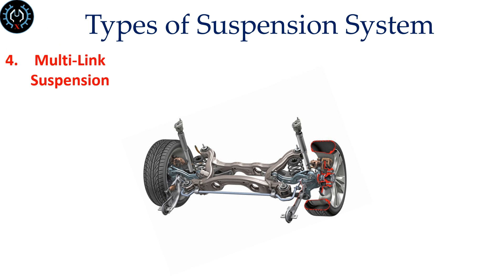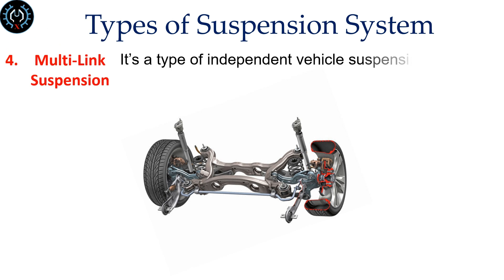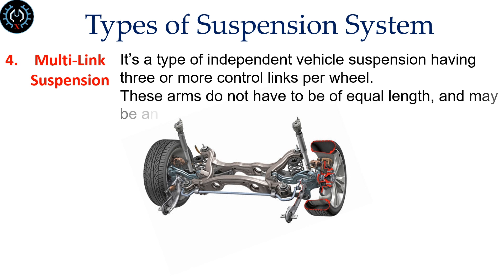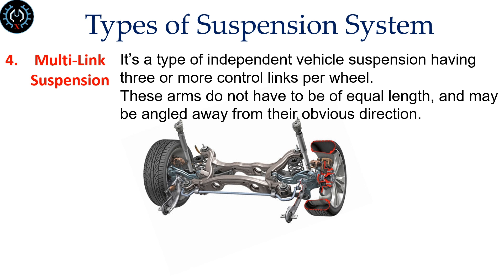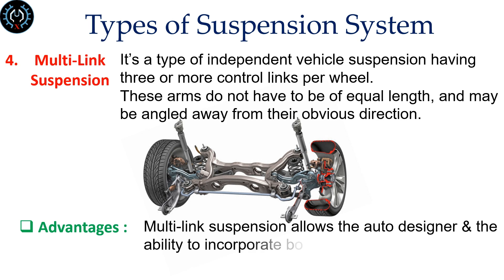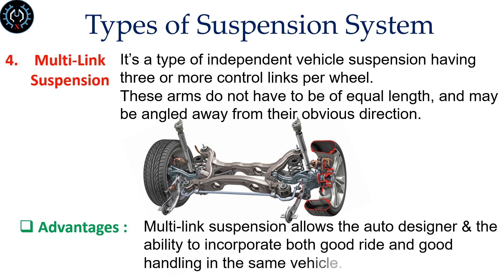Multi-link suspension is a type of independent vehicle suspension having three or more control links per wheel. These arms do not have to be of equal length and may be angled away from their obvious direction. Multi-link suspension allows the auto designer the ability to incorporate both good ride and good handling in the same vehicle.